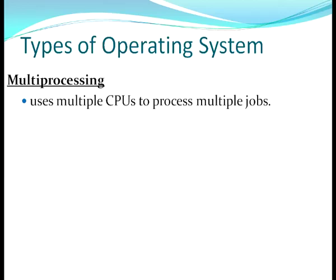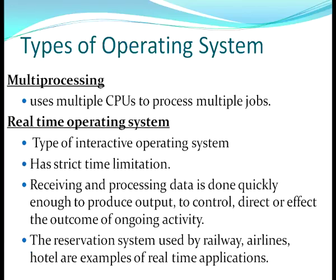In multiprocessing systems, multiple CPUs are used to process multiple jobs. Real-time operating systems have an interactive nature with strict time limitations — receiving and processing data is done quickly so that output is produced quickly to control or effect the outcome of an ongoing activity. A reservation system is an example of a real-time operating system, where booking or cancelling a ticket must be done within a particular time frame.